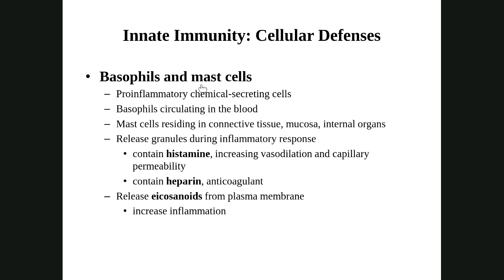Basophils and mast cells: if we have a cell causing inflammation in the bloodstream, we call it a basophil. If it's in a tissue, we call it a mast cell. They're essentially the same thing — both cause inflammation. They release histamine, a vasodilator that opens blood vessels, and heparin, an anticoagulant that prevents clots. Inflammation increases blood flow, and increased blood flow increases our ability to heal. Inflammation is a good thing — but if it gets out of control, that's definitely a bad thing.